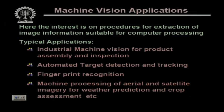Welcome to the course on digital image processing. Image processing can be used to extract descriptions or features for further processing by a digital computer. Such processing can be applied in industrial machine vision for product assembly and inspection, automated target detection and tracking, fingerprint recognition, and processing of aerial and satellite images for weather prediction, crop assessment, and many other applications.